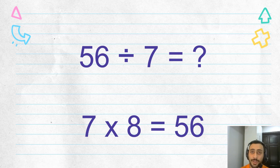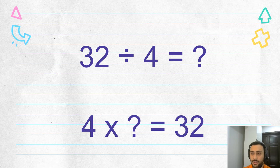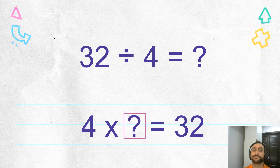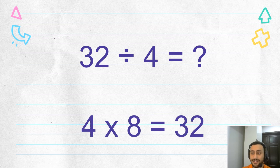If you ever forget it, you have to work on your multiplication table. So let's do another one: thirty-two divided by four. Four times what equals thirty-two? Four times five is twenty, four times six is twenty-four, four times seven is twenty-eight, four times eight is thirty-two. Found it! So thirty-two divided by four equals eight. So cool.